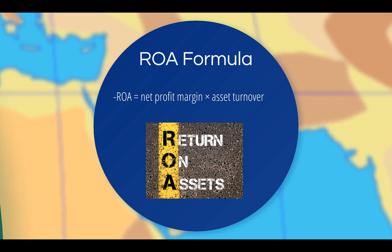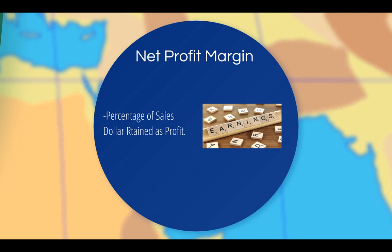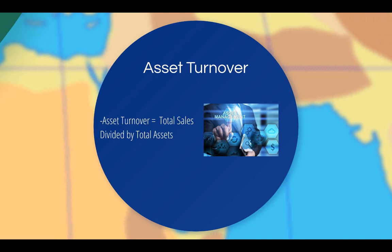The formula for ROA is: ROA equals net profit margin times asset turnover. Therefore, net profit margin and asset turnover are important in determining logistics efficiency, and together they form the basis for computing ROA. Net profit margin measures the proportion of every sales dollar that is kept as profit. Asset turnover measures the efficiency of the capital employed to generate sales, and is computed by dividing total sales by total assets, providing information on how efficiently capital is employed to support the business. The most relevant logistics asset is typically inventory. Additionally, logistics decisions can influence the speed at which invoices are paid, as reflected in accounts receivable on the balance sheet.